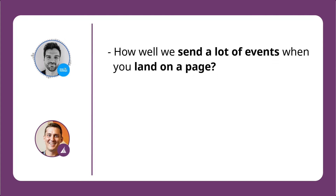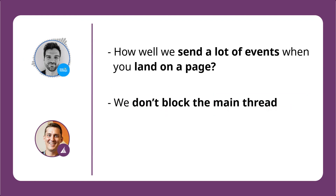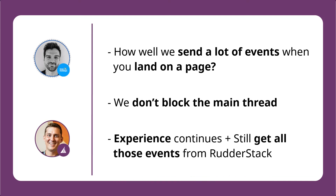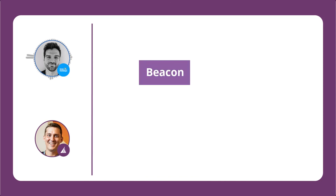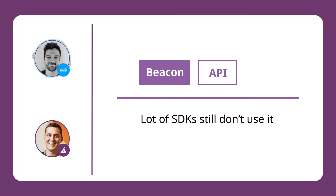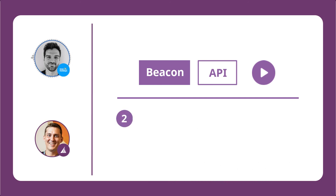The second area was thinking about how we send a lot of events when you land on a page, and those events can be synchronous because the default XHR request is always synchronous. How do we ensure we don't block the main thread and that the rest of the experience continues to happen, while still getting all of those events from RudderStack? That's where we started trialing the Beacon API, which is a widely supported API but a lot of SDKs still don't use it — due to legacy browser concerns and some quirks. We wanted to use the Beacon API because it's asynchronous, especially when offloading events after moving from one page to another, and it improves the performance of sending those events.